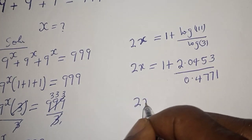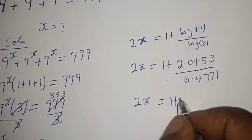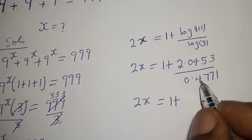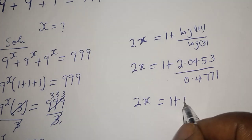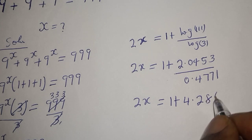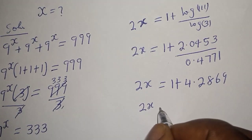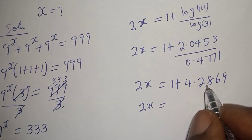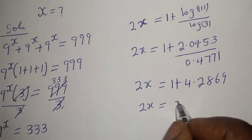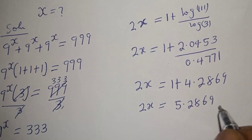Then 2s is equal to 1 plus 2.0453 divided by 0.4771, and 2.0453 divided by 0.4771 is 4.2869. So 2s equals 1 plus 4.2869, which is 5.2869.